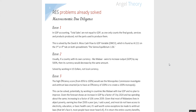Error 1. In GDP accounting, total sales are not equal to GDP as one only counts the final goods, services, and products produced, not the parts used to produce them. This is solved by the David A. Moss cash flow to GDP variable, DMCV, which is found as AI211 on the third or fourth tab on both spreadsheets. That's the Siena equilibrium.